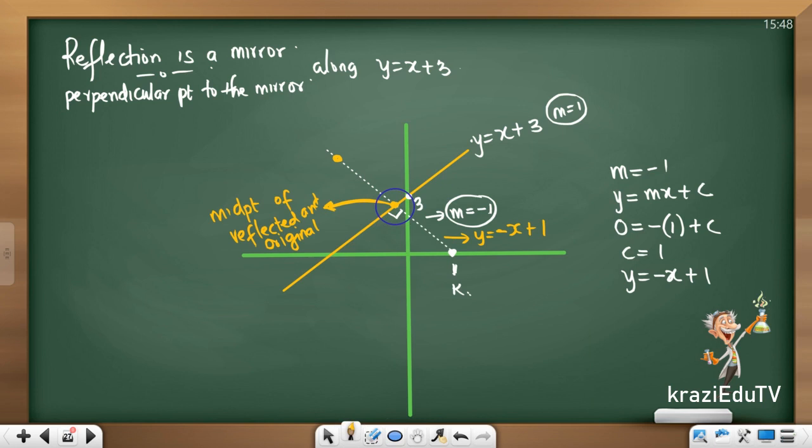So, X plus 3 equals to negative X plus 1. If I bring my X there, I'll have 2X. And 1 minus 3 will be negative 2. X equals to negative 1. Makes sense. What about my Y value? We just throw it in. Y equals to X plus 3. And Y would be negative 1 plus 3. And that would be 2. So, the coordinate of this point is negative 1 and 2. Which is the midpoint of my image. So, the point of intersection is the midpoint between the image and the original. We know this as 1 and 0. Analytical geometry. How do we get this point?